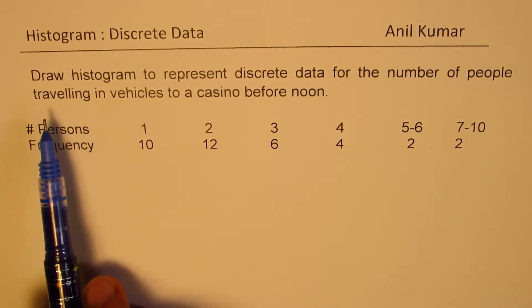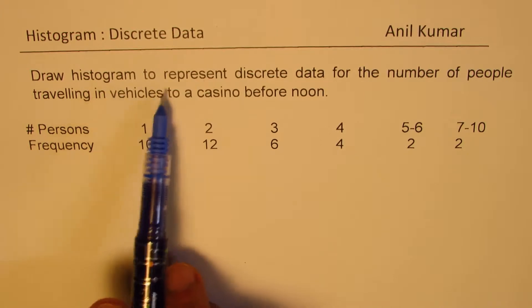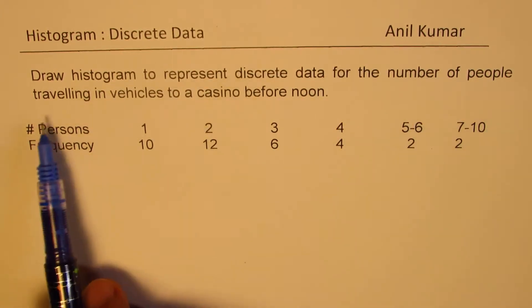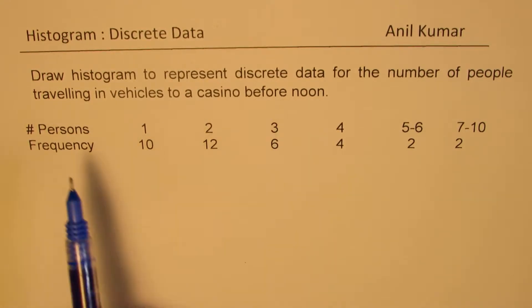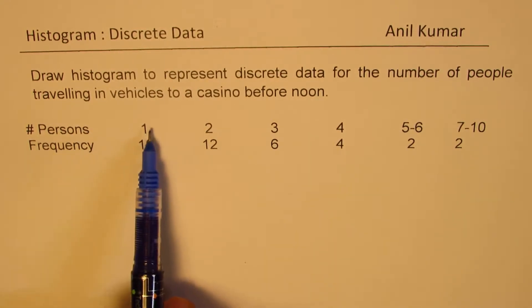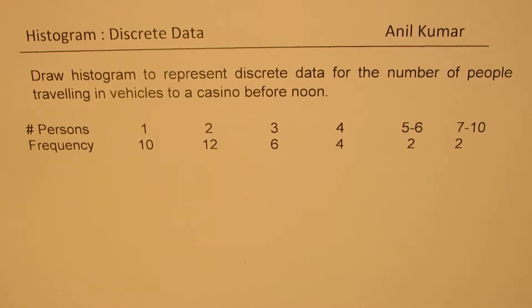The example is draw a histogram to represent discrete data for the number of people traveling in vehicles to a casino before noon. So number of persons 1, frequency 10. It means that 1 person was seen in 10 vehicles.